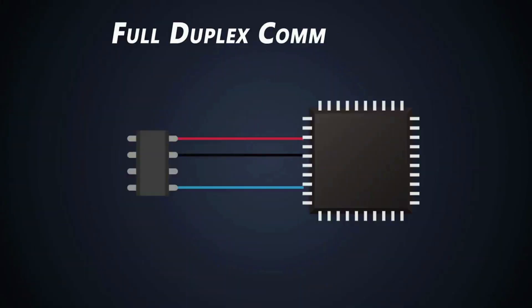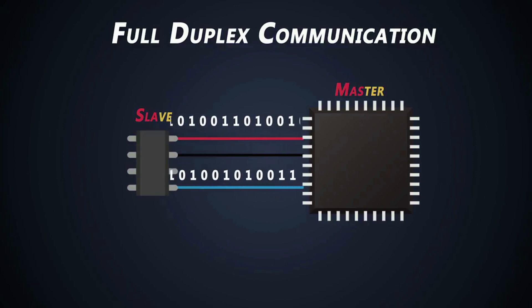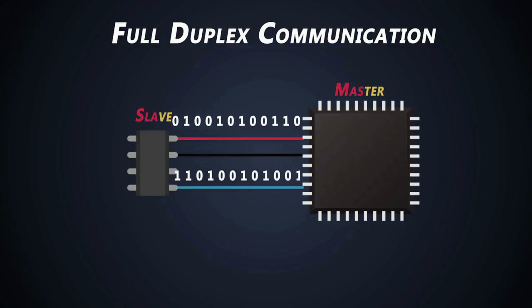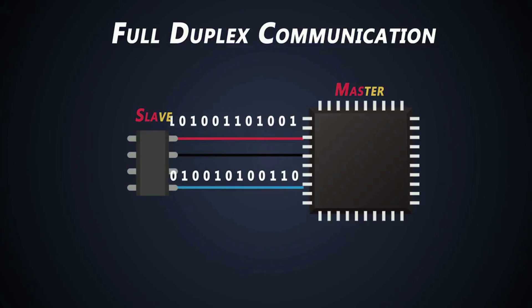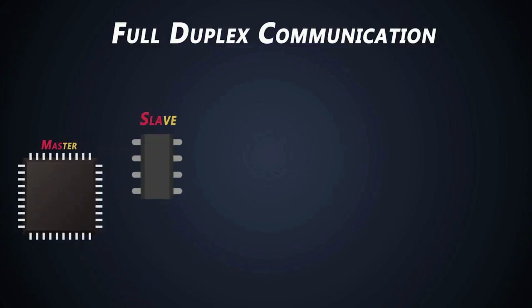The SPI communications is a full duplex communications protocol having master and slave configurations. In full duplex mode, two devices talking to each other can transmit and receive data at the same time. SPI communications doesn't rely on just one data line. When two devices are communicating using SPI protocol, one of them is the master and the second is the slave.